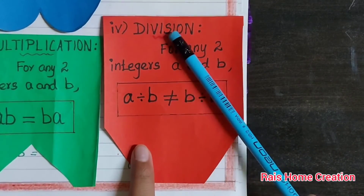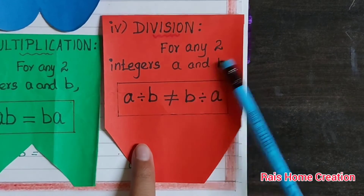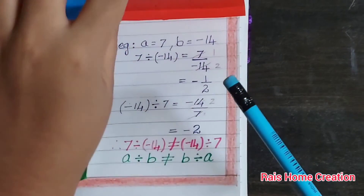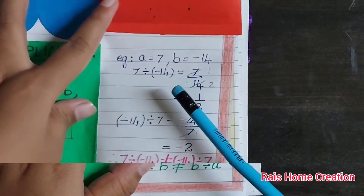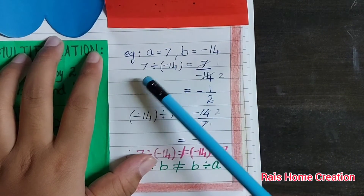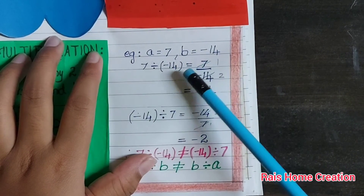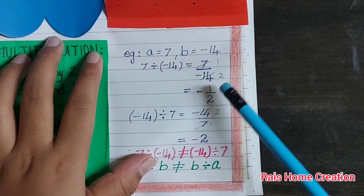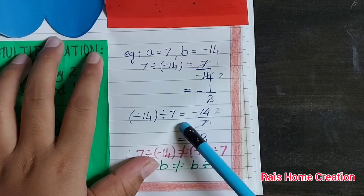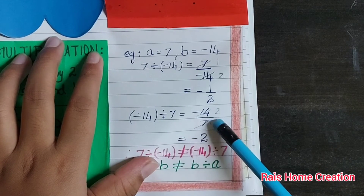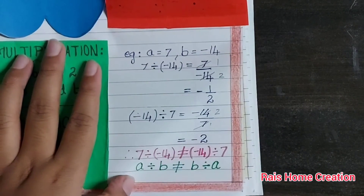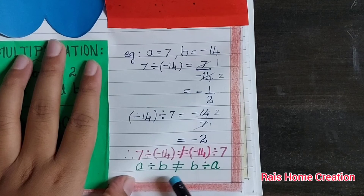Fourth, division. For any two integers A and B, A divided by B is not equal to B divided by A. Example: A equal to 7, B equal to minus 14. 7 divided by minus 14 equal to 7 by minus 14, simplified we get minus 1 by 2. Minus 14 divided by 7 equal to minus 14 by 7, we get minus 2. Both the answers are not equal. Hence, the condition is not equal.